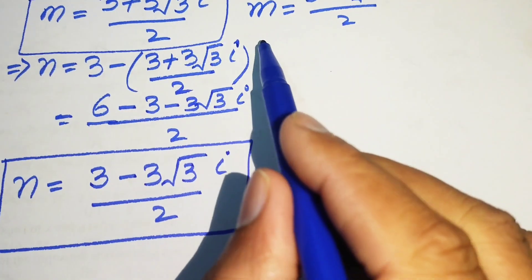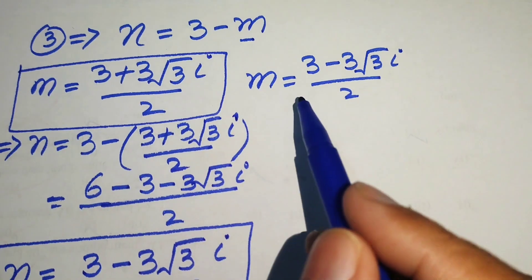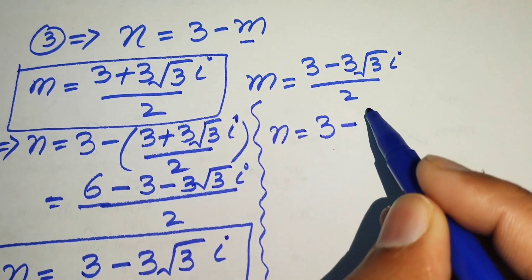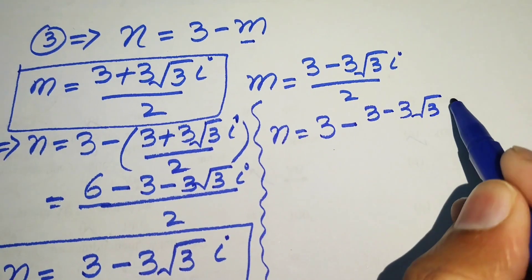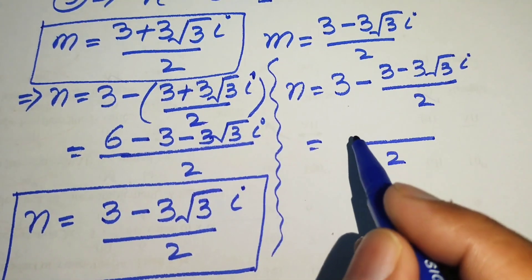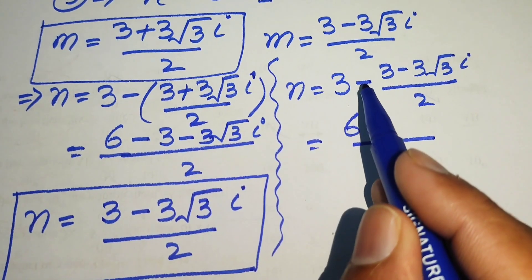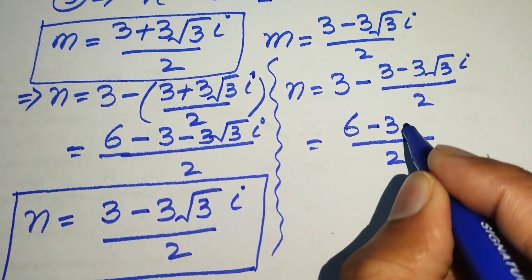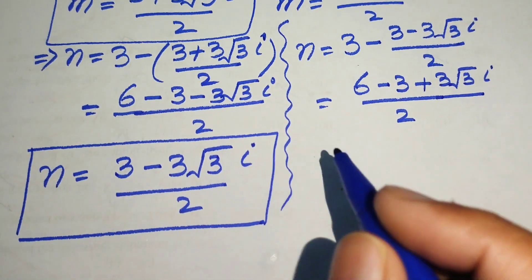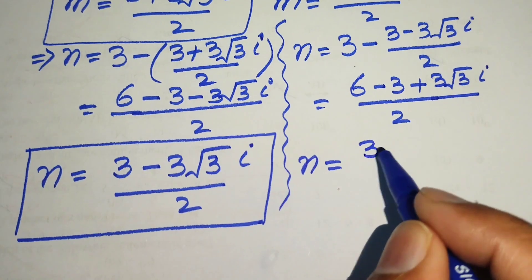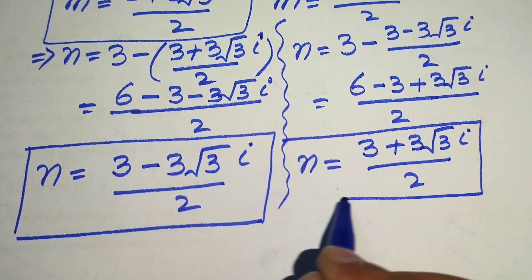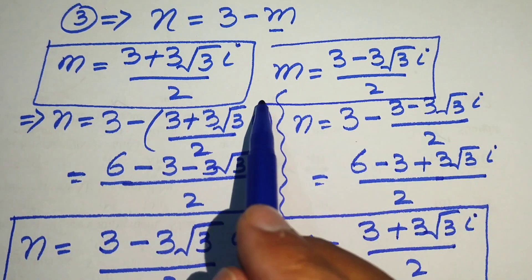For the second solution, we substitute the second value of m into n equals 3 minus m. So n equals 3 minus (3 minus 3√3·i) divided by 2. Taking the LCM of 2 gives (6 minus 3 plus 3√3·i) divided by 2, which simplifies to n equals (3 plus 3√3·i) divided by 2.